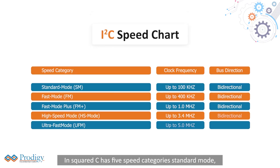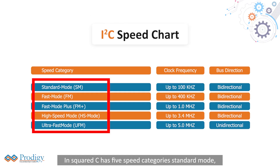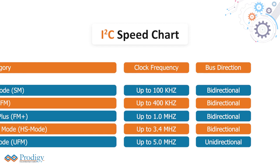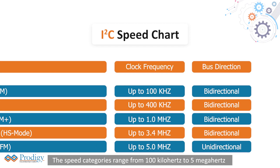I2C has five speed categories: standard mode, fast mode, fast mode plus, high speed mode, and ultra fast mode. The speed categories range from 100 kHz to 5 MHz.